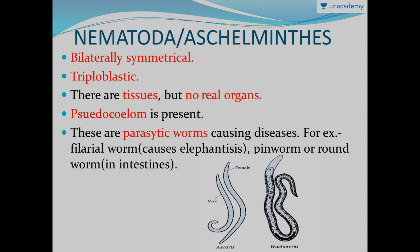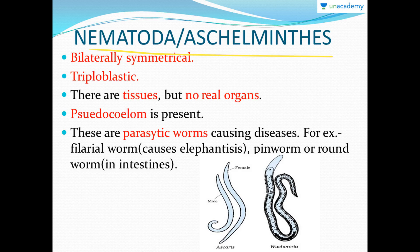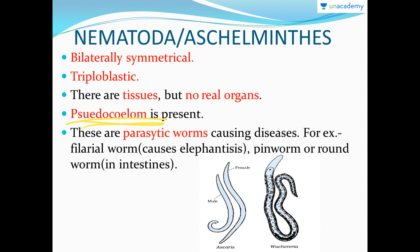Nematoda, or Aschelminthes, are very similar to Platyhelminthes but they are cylindrical in structure instead of being flat. They are also bilaterally symmetrical and triploblastic with three germ layers. There are tissues but no real organs, and they have a pseudocoelom, meaning a false body cavity. They are mostly parasitic worms living in hosts such as humans, which is why they cause diseases. For example, the filarial worm causes elephantiasis, the pinworm, and the roundworm which remains in the intestines.